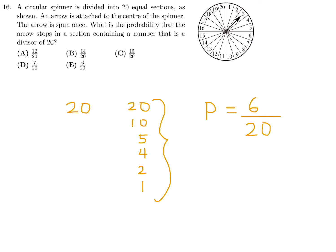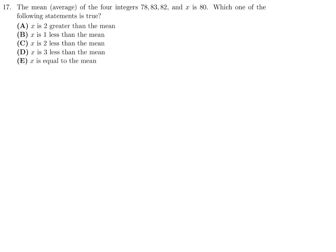Number 16, the answer is E. The mean of four integers - 78, 83, 82, and X - is 80. Which one of the following statements is true? So 78 plus 83 plus 82 plus X divided by 4 is 80, so that means 243 plus X is equal to 320, and therefore X is 77. So X is obviously three less than the mean, which is 80, and that is choice D.